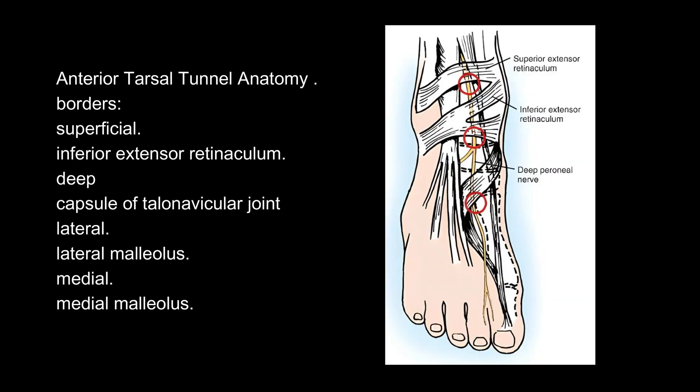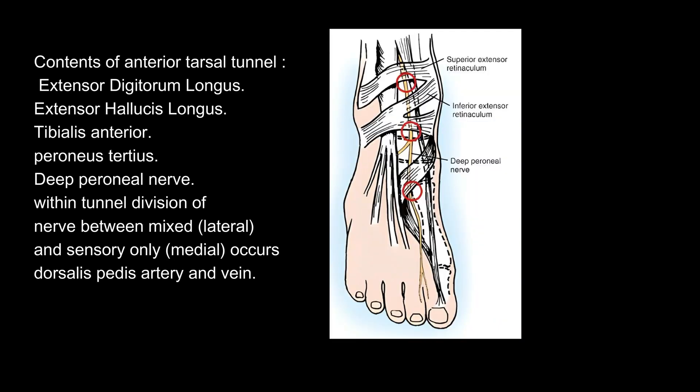Anterior tarsal tunnel anatomy. Borders: superficial — inferior extensor retinaculum; deep — capsule of talonavicular joint; lateral — lateral malleolus; medial — medial malleolus. Contents of anterior tarsal tunnel: extensor digitorum longus, extensor hallucis longus, tibialis anterior, peroneus tertius, and the deep perineal nerve (which divides within the tunnel into a mixed lateral branch and a sensory-only medial branch), as well as the dorsalis pedis artery and vein.